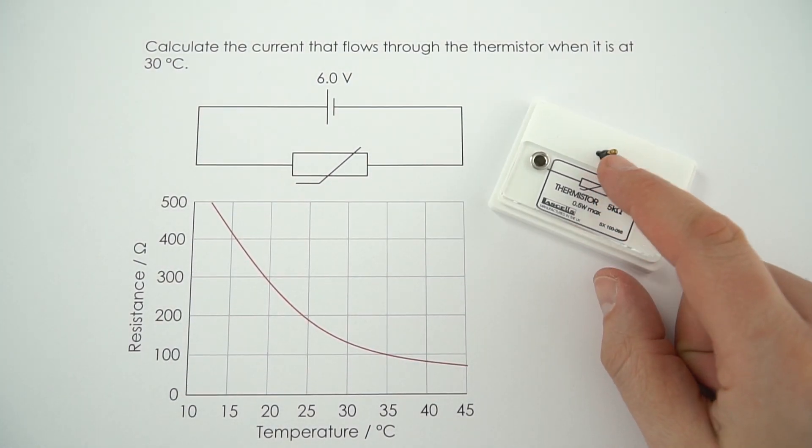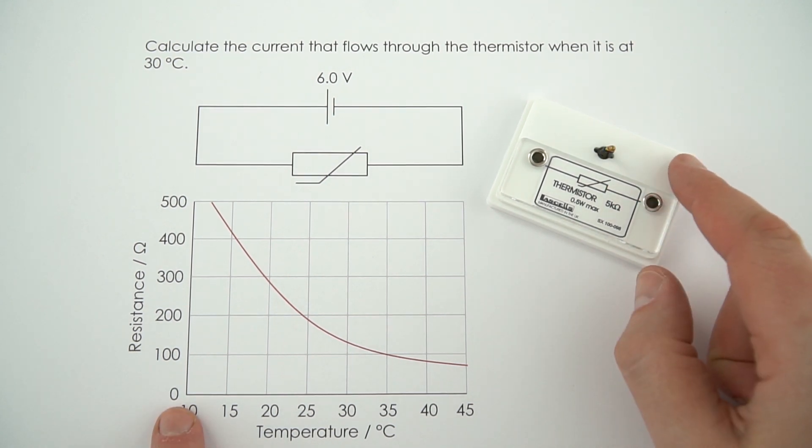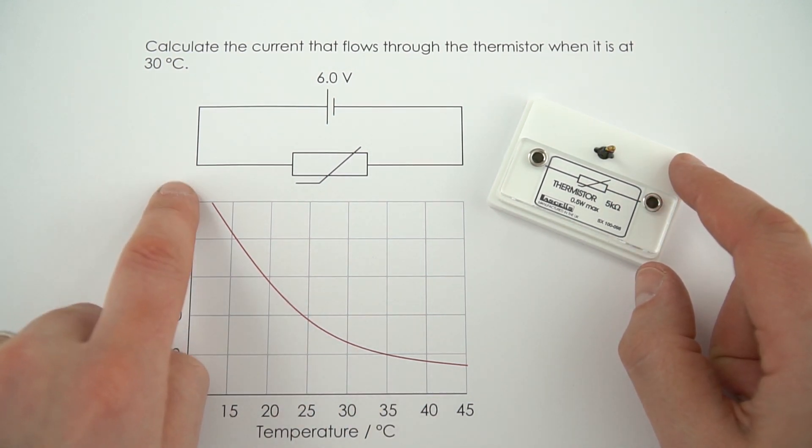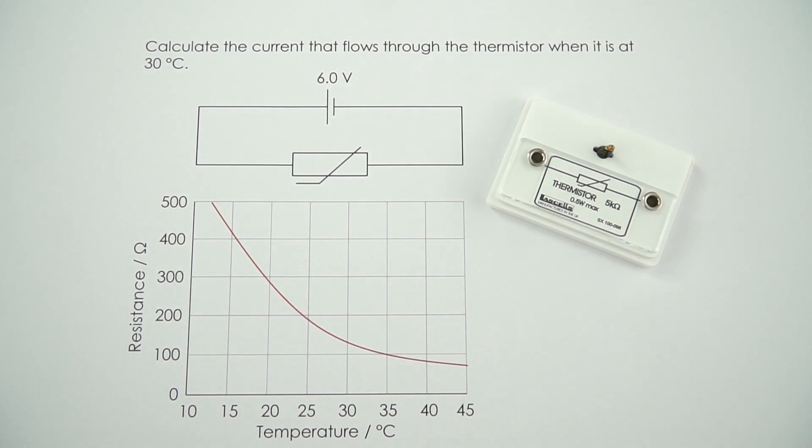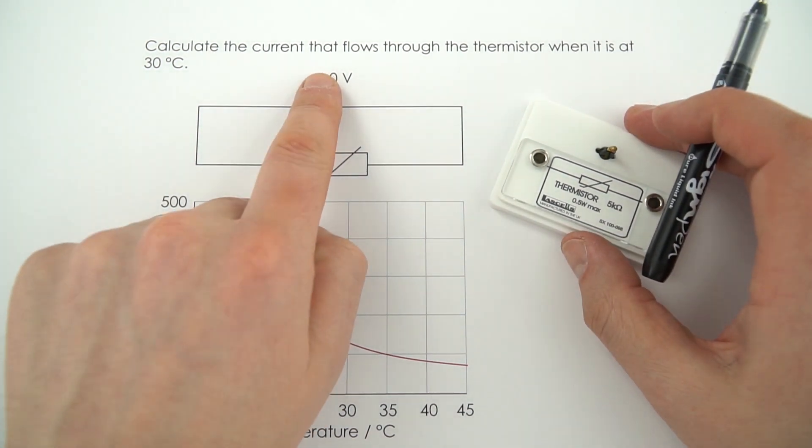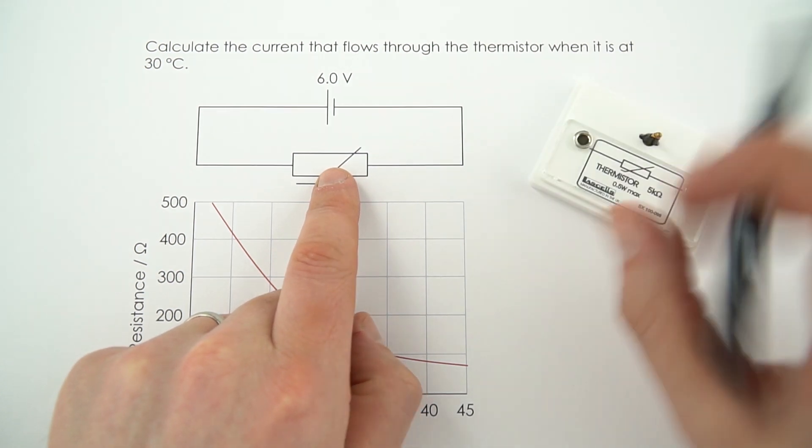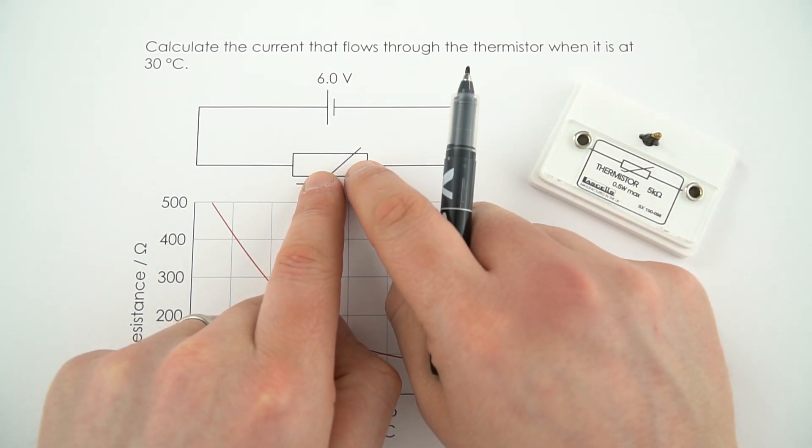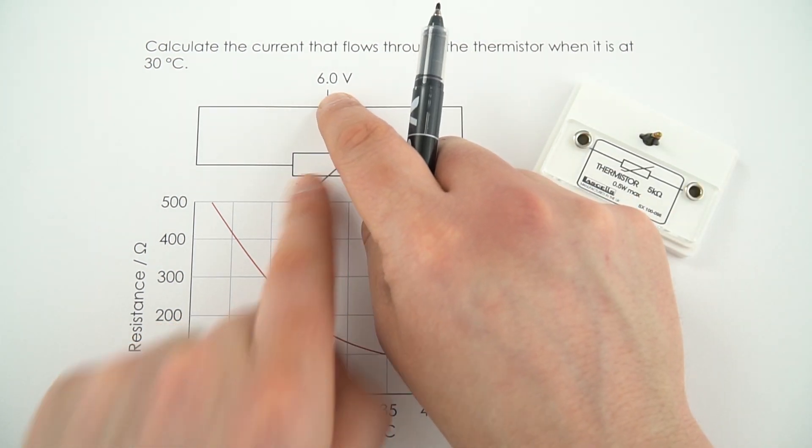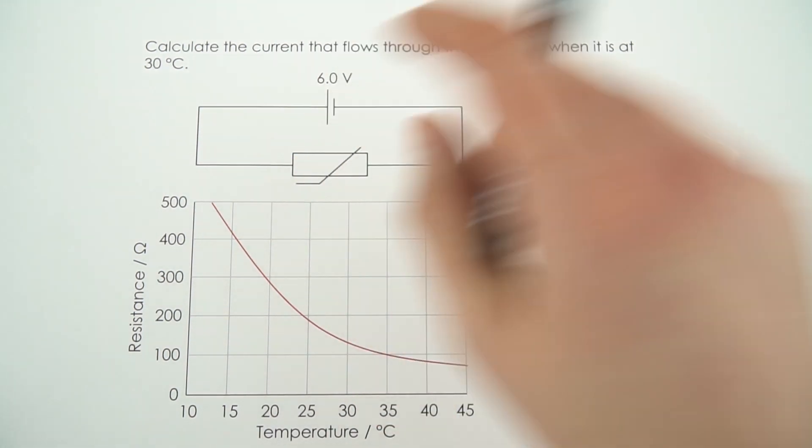Here we have a thermistor, which is our thermal resistor. As the temperature increases, its resistance goes down. The question says we need to calculate the current that flows through this thermistor when it's at 30 degrees. So if it's connected into a very simple circuit with a 6 volt cell, we need to work out the actual current that's flowing.